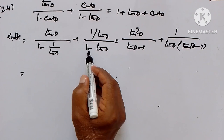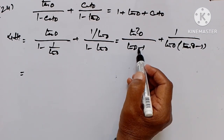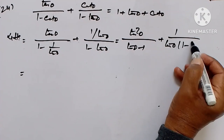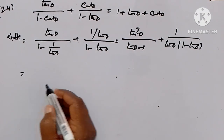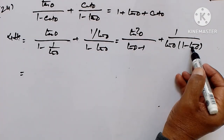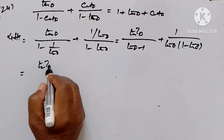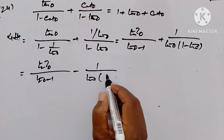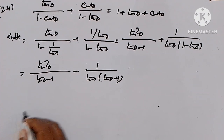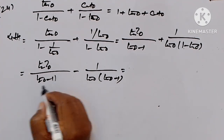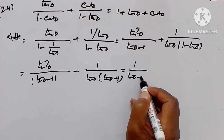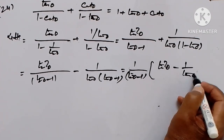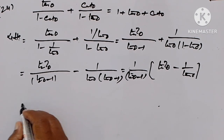Now this becomes: 1 upon (tan θ - 1) common, and here we have (1 - tan θ). We take minus common, so it becomes tan θ upon (tan θ - 1) minus 1 upon (tan θ · (tan θ - 1)). Taking 1 upon (tan θ - 1) as common, what remains is tan θ minus 1 upon tan θ.